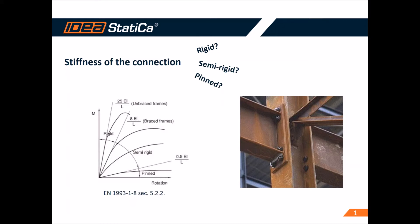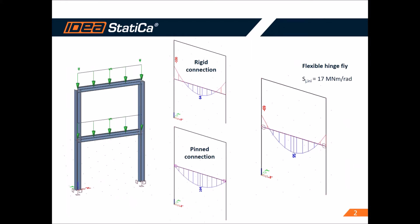According to Eurocode 1993, part 1-8, section 5.2.2, we can classify the behavior of a connection into three classes: rigid, pinned, and semi-rigid. The first two are widely used in engineering practice and every engineer knows their behavior. But in real construction, the majority of connections are semi-rigid. Do engineers calculate with this flexibility in their finite element analysis models? For a rigid frame with a linear load along the length of a member, the results for rigid and pin connections are obvious and easy to predict.